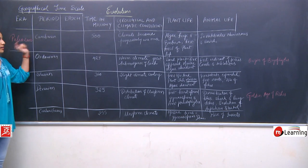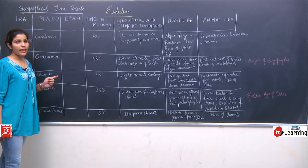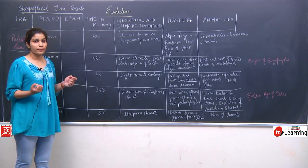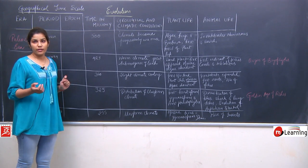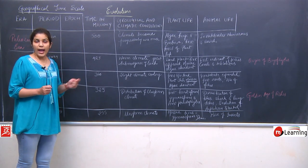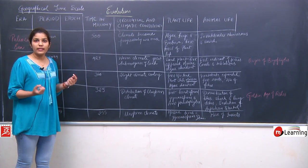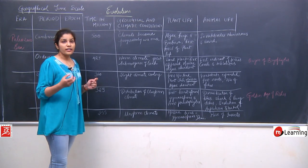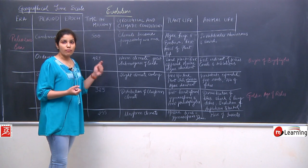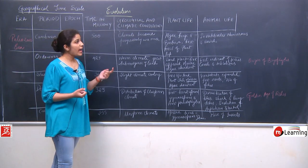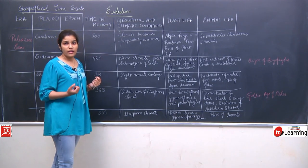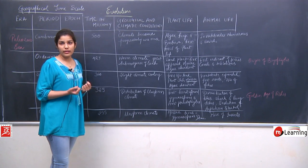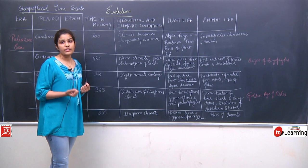The first period of the Paleozoic era is the Cambrian, starting around 500 million years ago. The climate of the earth started becoming somewhat warmer than in the Proterozoic era. Plant life — algae, fungi, bacteria, and early plant fossils — were present. More invertebrates evolved in animal life, including coelenterates, platyhelminthes, helminths, and primitive annelids.